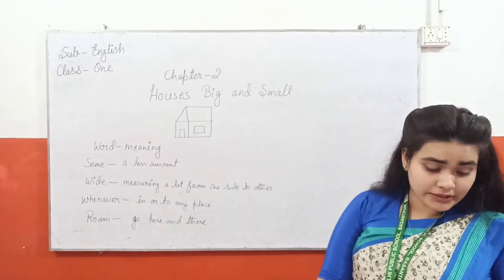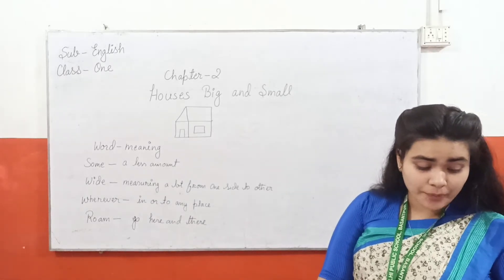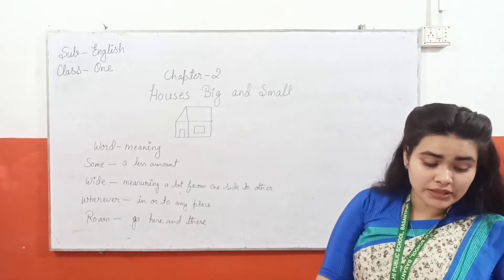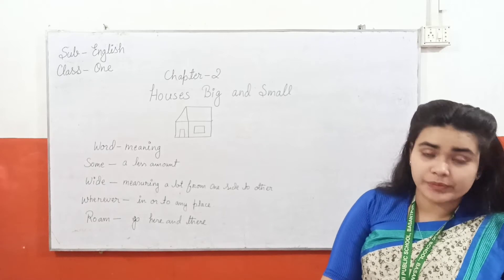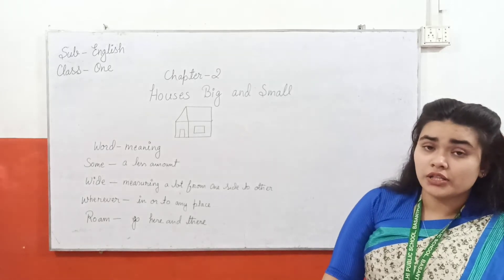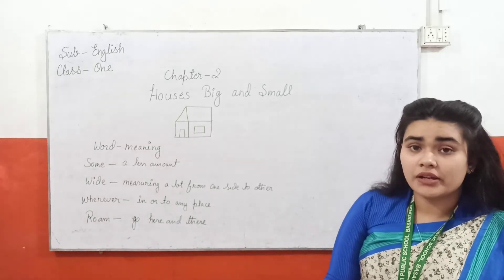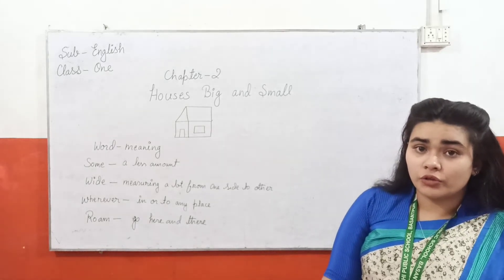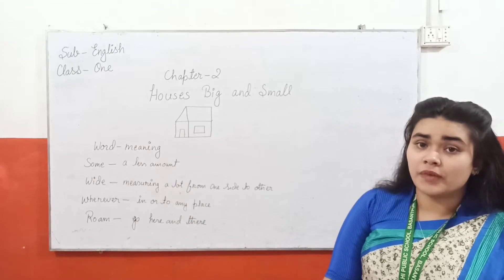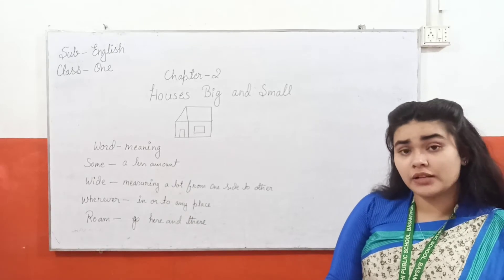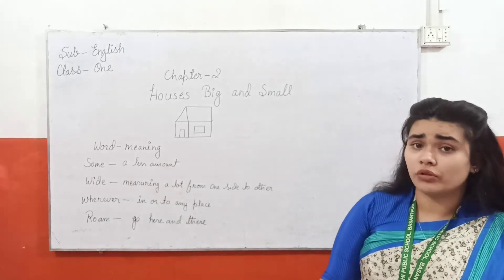Now let's read the chapter. Chapter 2 is Houses Big and Small. Houses are of two kinds — some houses are big, some houses are small.